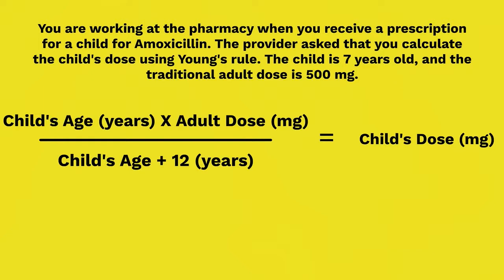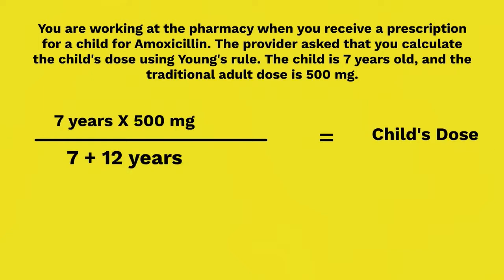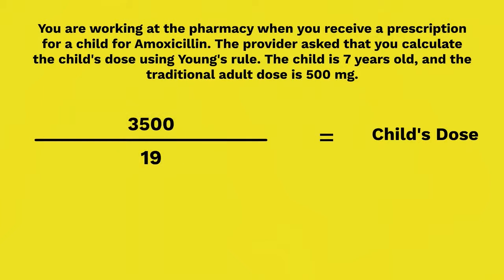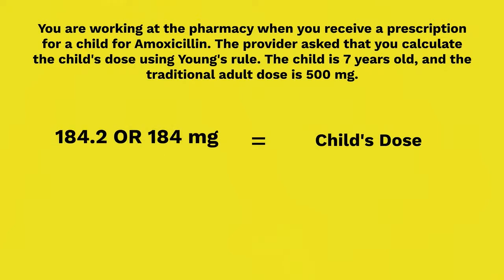Now let's walk through the Young's Rule solution. You substitute in your numbers: 7 years times 500 milligrams divided by 7 plus 12 years. Solving the numerator and denominator gives 3,500 over 19. Your final answer should be 184.2, or 184 milligrams. This is how you solve a dose problem using Young's Rule.